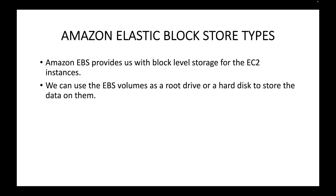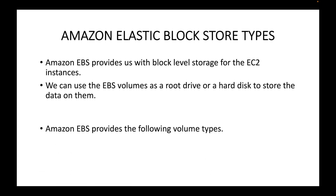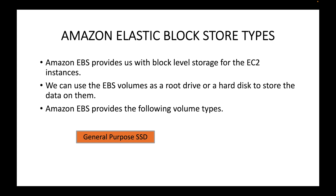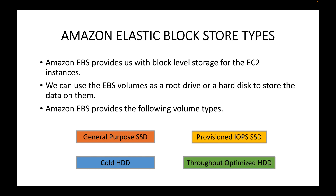We can use EBS volumes as a root drive. If you're on a Windows machine you can think of this as a C drive, and on a Linux machine it's your root drive. We can use this as a hard disk to store any kind of data — application logs, scripts, or the application itself. Amazon provides four volume types: General Purpose SSD, Provisioned IOPS SSD, Cold HDD, and Throughput Optimized HDD.